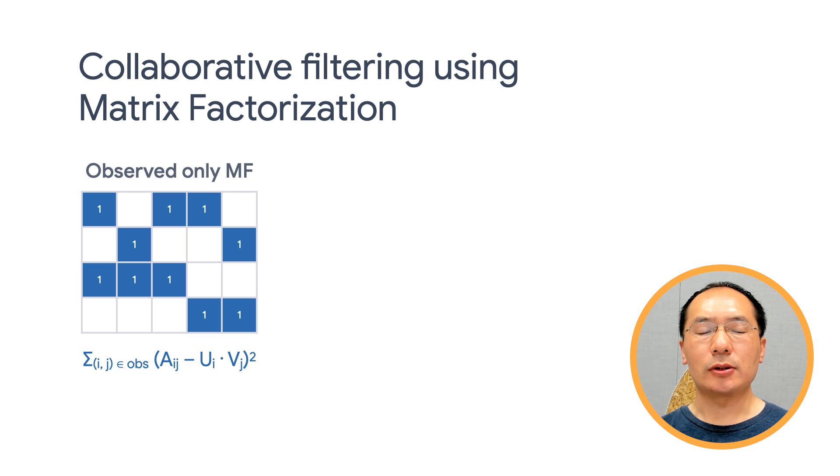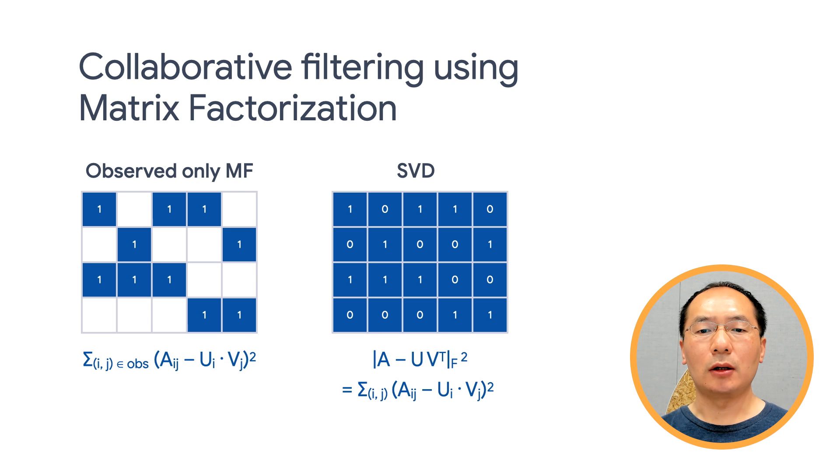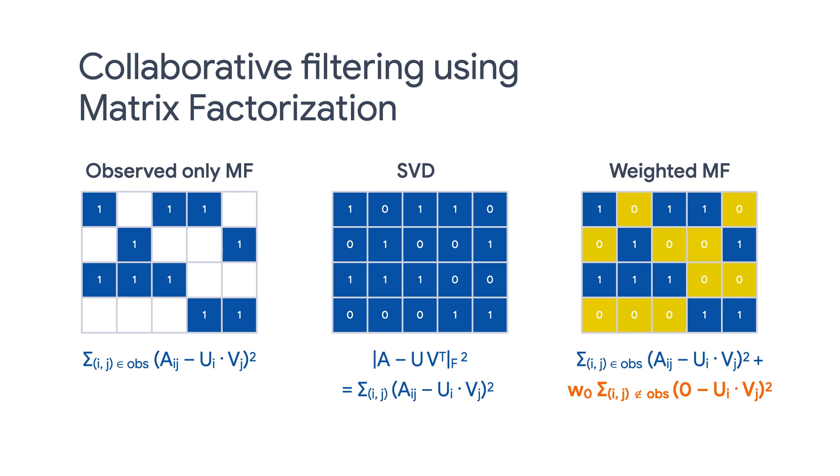There are two approaches to handle this. First, we can treat all unobserved entries as zero, and then solve it using SVD, singular value decomposition. We won't be reviewing linear algebra here, but you should know that SVD is not very good at this, because the A matrix tends to be very sparse in practice. So the SVD solution tends to have poor generalization capabilities. A better approach is weighted matrix factorization. In this case, we still treat unobserved entries as zero, but we scale the unobserved part of the objective function, highlighted in orange, so that it's not overweighted. As you can see, the weight W0 is now a hyperparameter you need to tune.